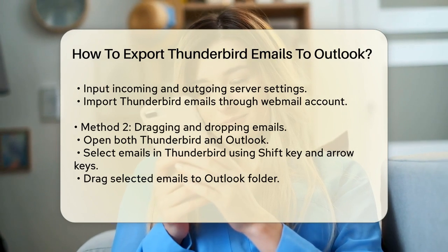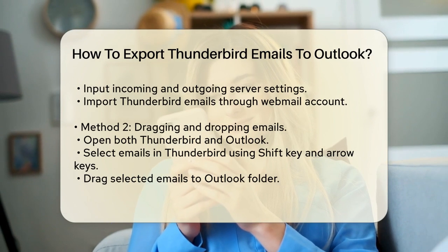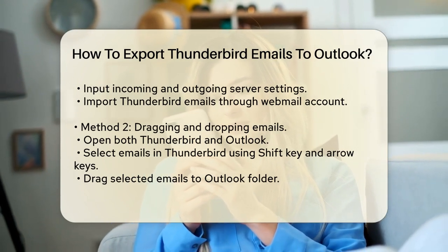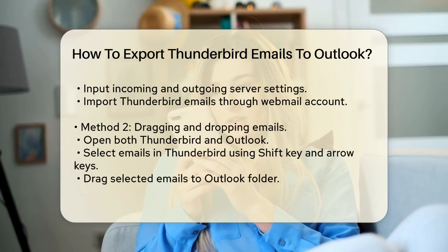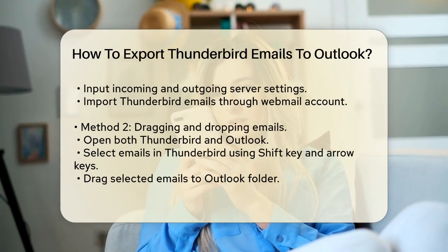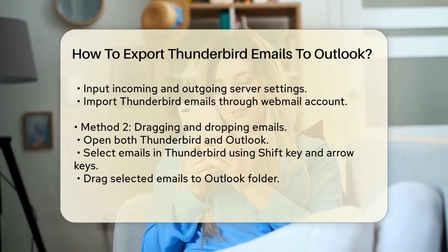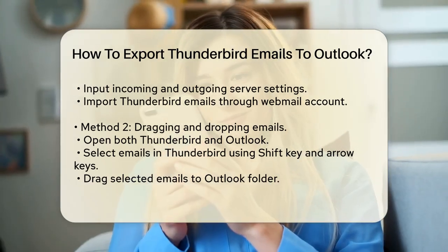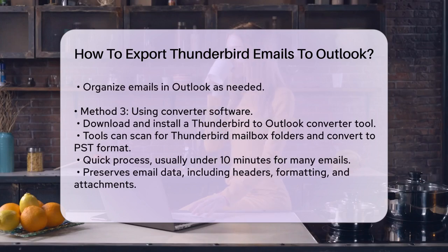Dragging and dropping emails. Another simpler method is to drag and drop emails directly from Thunderbird to Outlook. Open both Thunderbird and Outlook on your computer. In Thunderbird, select the emails you want to transfer by holding down the Shift key and using the arrow keys. Drag these selected emails to the desired folder in Outlook. You can then organize these emails into folders or labels within Outlook.